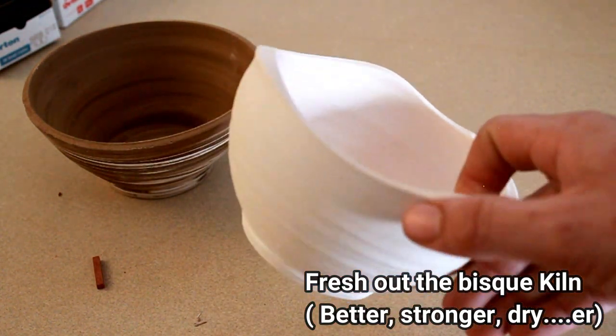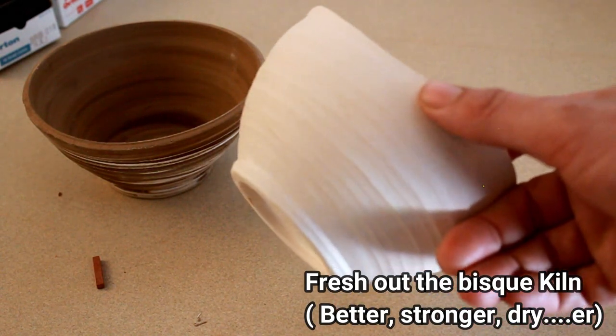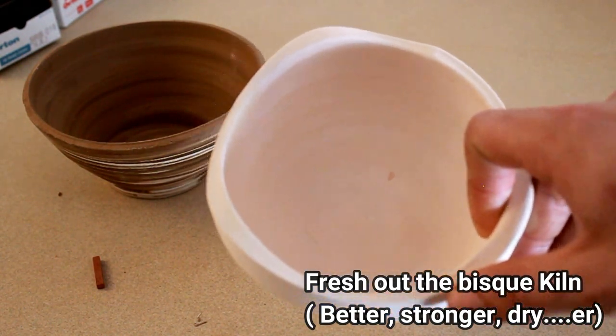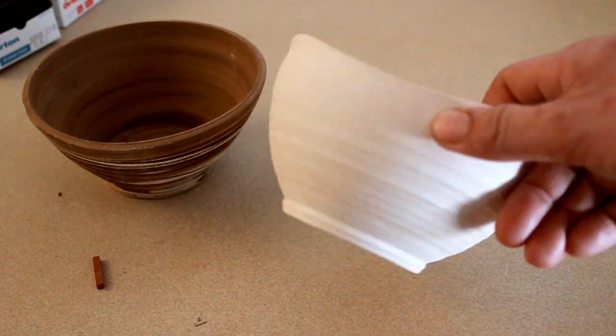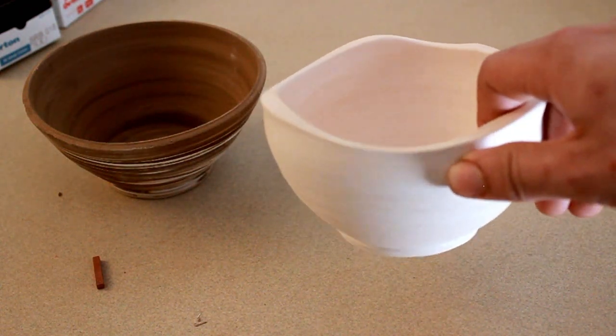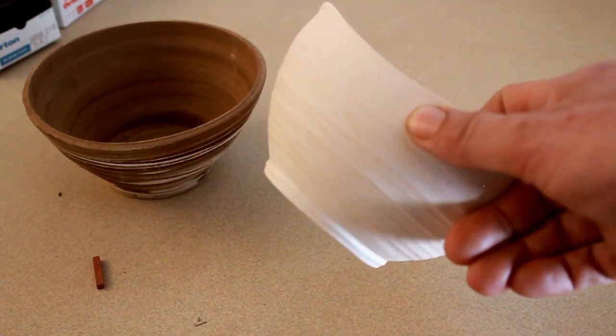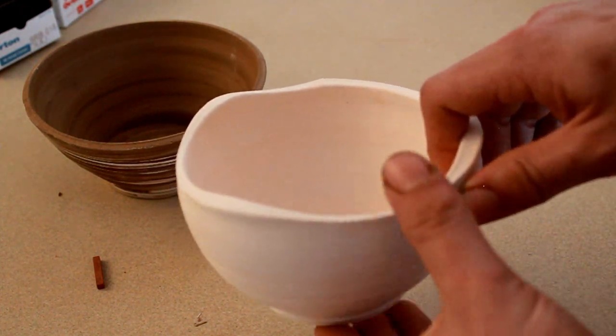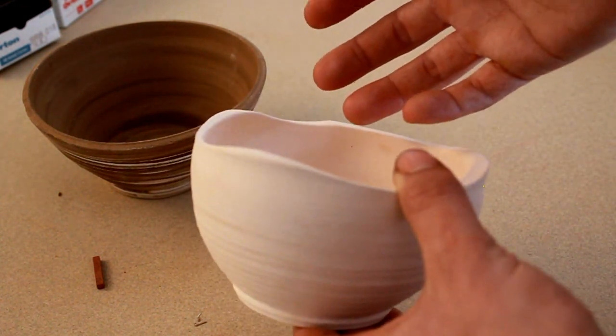It's a lot more dry and all the water's been taken out of it so that it can accept glaze later on. Now you can handle it freely without really worrying about breaking it too much. And you can put glaze on it and it'll stick to the body. Because now that the pores are open, the glaze can freely be accepted into the clay body.